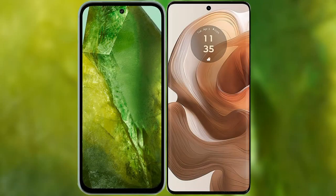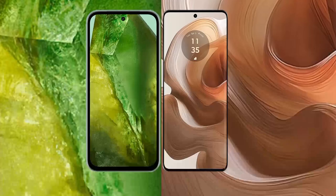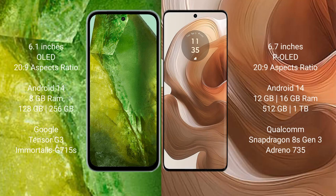I will compare the new Google Pixel 8a with the Motorola Edge 50 Ultra. The Google Pixel 8a comes with a 6.1-inch OLED display at 6:26 to 9 aspect ratio. The Motorola Edge 50 Ultra features a 6.7-inch P-OLED display with the same 6:26 to 9 aspect ratio.